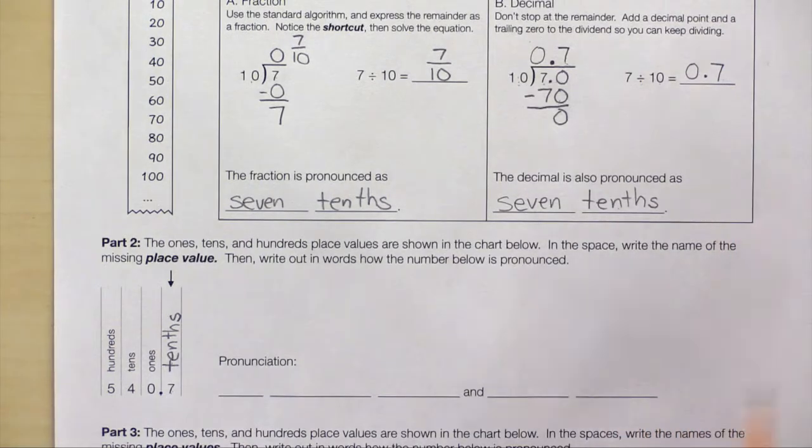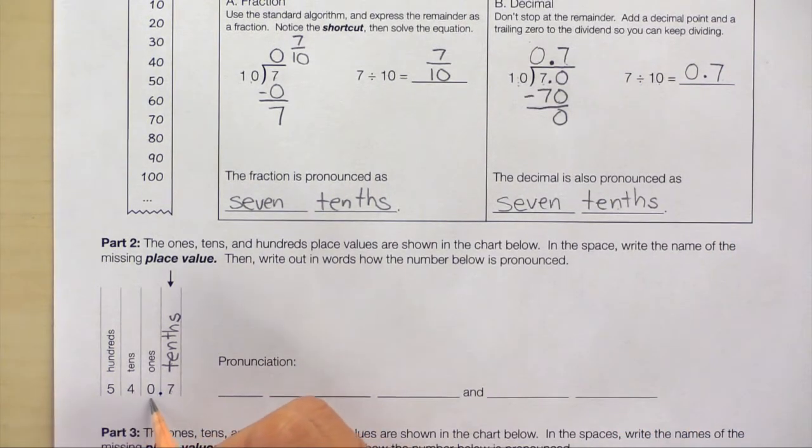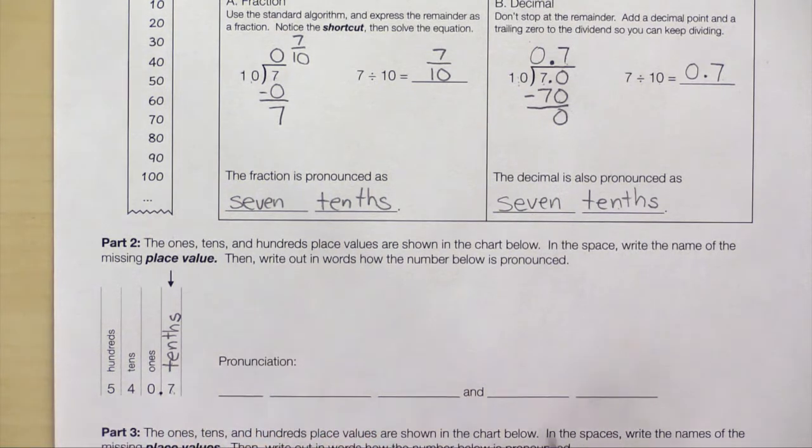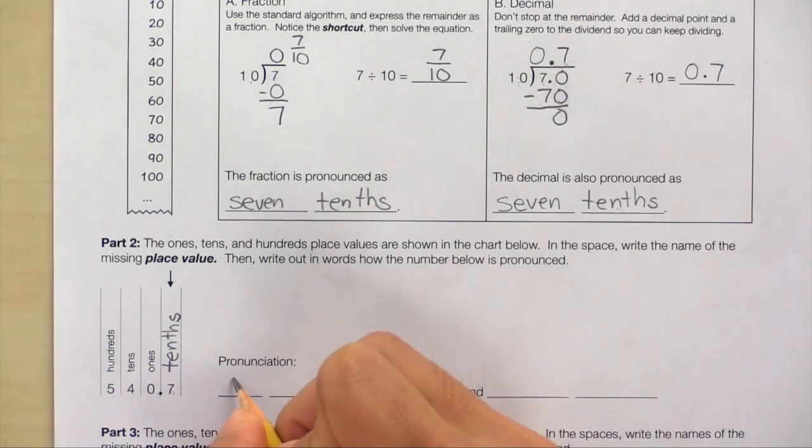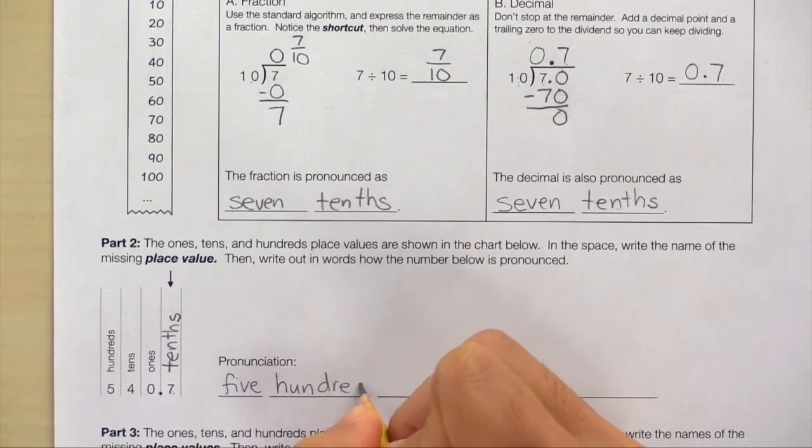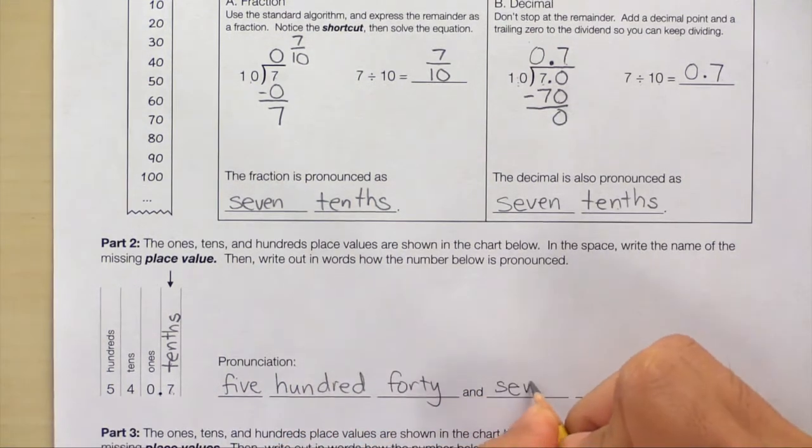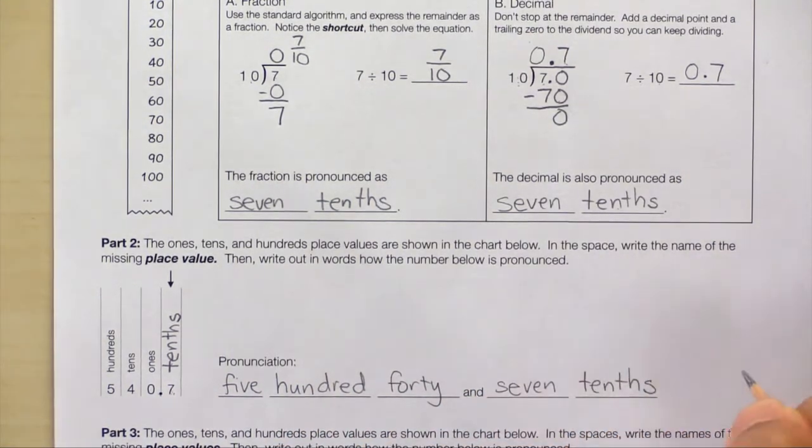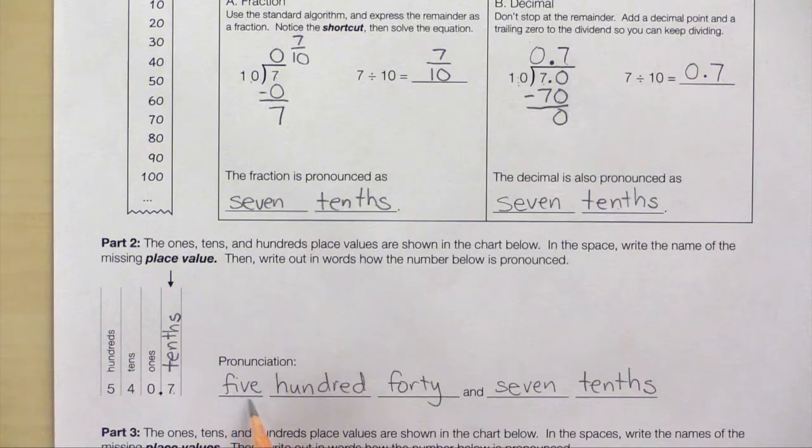That means this number is pronounced 540 and 7 tenths. Let's write that down here. So once again, let's take a look at how we pronounce that number. 540 and 7 tenths.